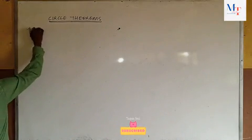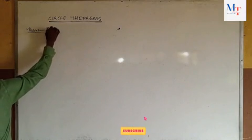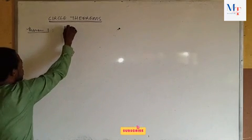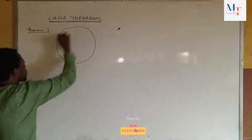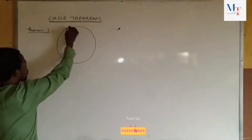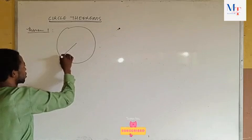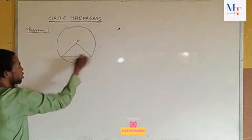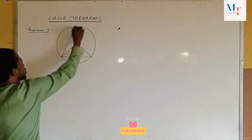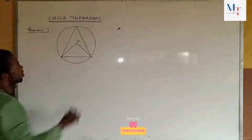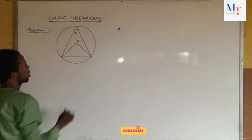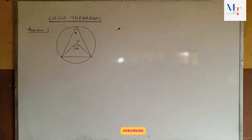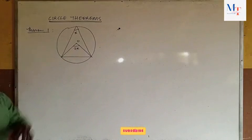Theorem 1 states that the angle at the center of the circle is twice the angle at the circumference. Looking at the diagram, we have the center of the circle and we have the chord. The angle subtended by this chord at the center is twice the angle at the circumference. So if the angle at the circumference is x, the angle at the center will be 2x.